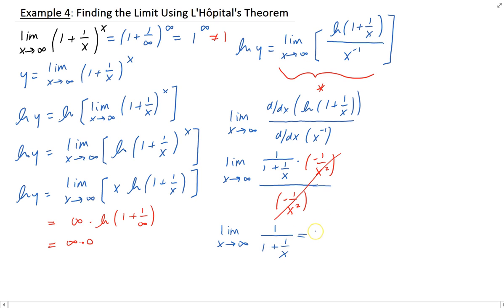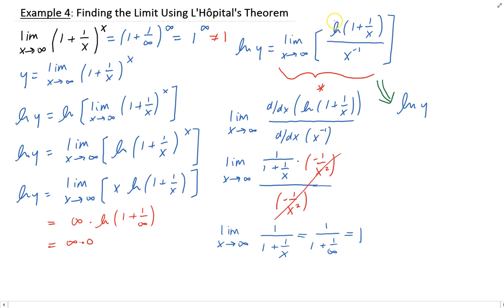Taking the limit of 1 over (1 + 1/x) as x goes to infinity: 1/∞ goes to 0, so we get 1 over 1, which equals 1. But remember, 1 is not the final answer — we set y equal to the original limit, so we have ln(y) = 1. Taking e of both sides: e to the ln(y) is just y, and e to the 1 is e. Therefore y = e, and that is the solution to our original limit.